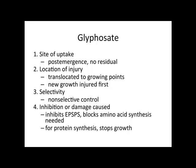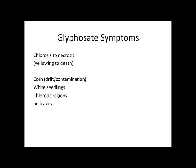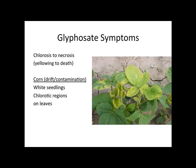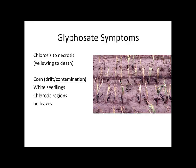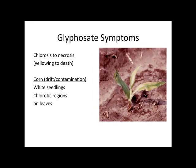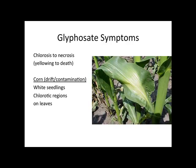How does glyphosate work? It is post-emergent with no residual, translocated to the growing point, and new growth is injured first. It provides non-selective control by inhibiting the EPSP synthase, which blocks amino acid synthesis needed for protein synthesis, which in turn stops growth. Symptoms range from chlorosis to necrosis — anywhere from general yellowing all the way to burnt, charred, crisp, dead tissue. You can also see chlorotic regions on leaves, white seedlings, and chlorotic tissue near the leaf and the growing point.